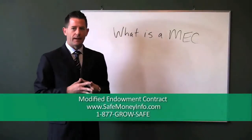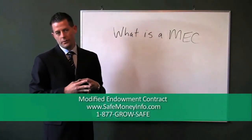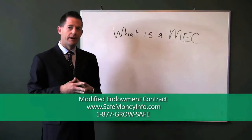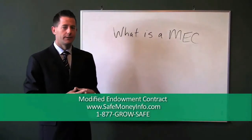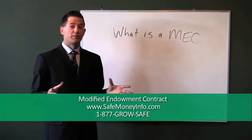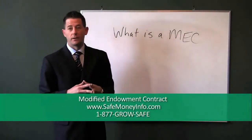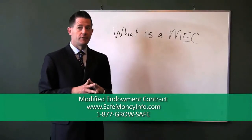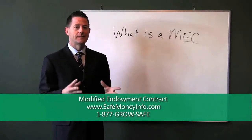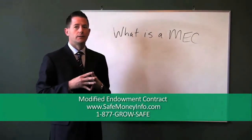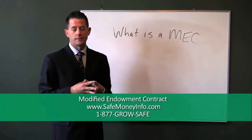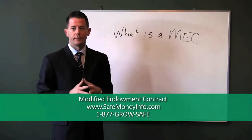What is a MEC, also known as a Modified Endowment Contract? A MEC means that cumulative premiums paid during the first seven years of a life contract exceed the amount needed to provide a paid up policy based on seven annual premiums.